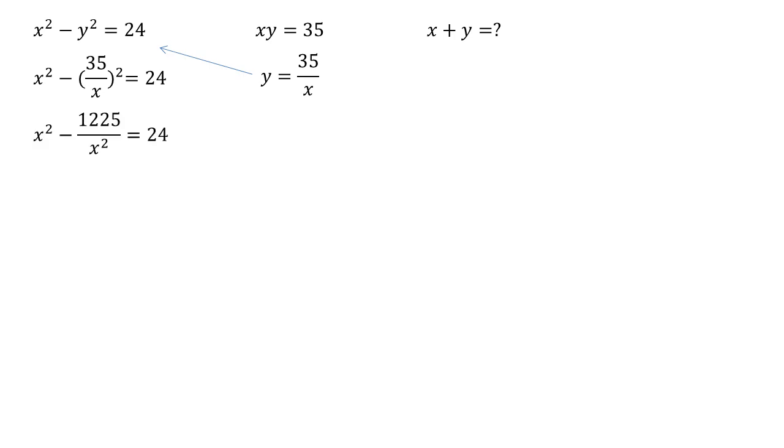Squaring out the brackets gives us x squared minus 1225 over x squared is equal to 24. And now if we multiply through by x squared and move everything over to one side we end up with x to the power of 4 minus 24x squared minus 1225 equals 0.